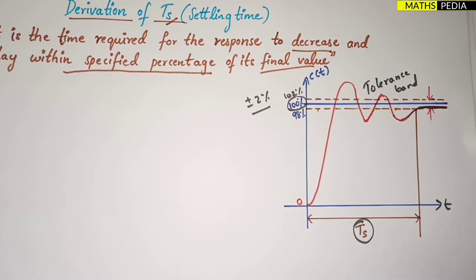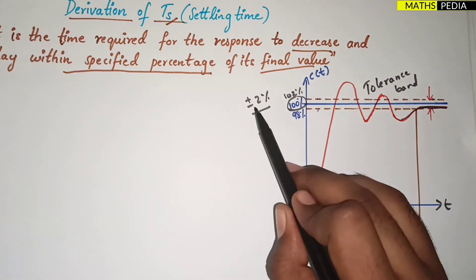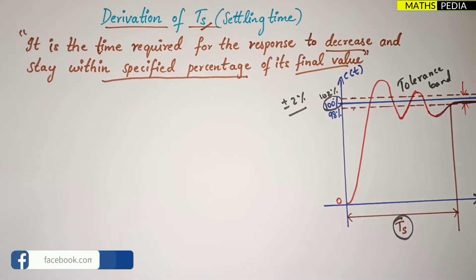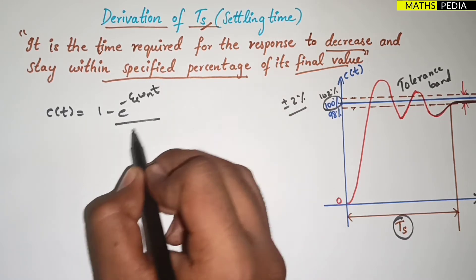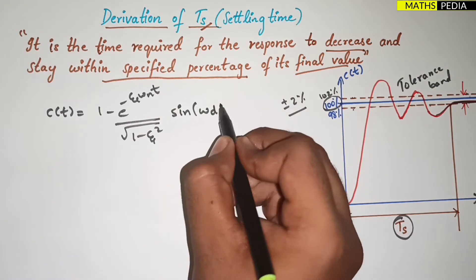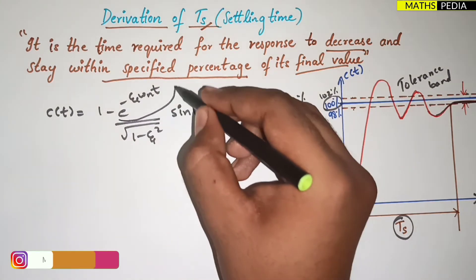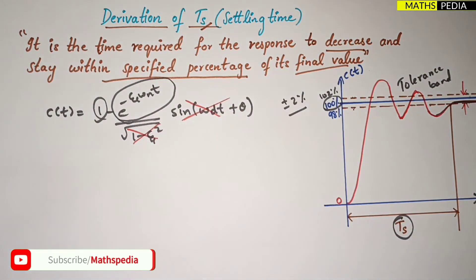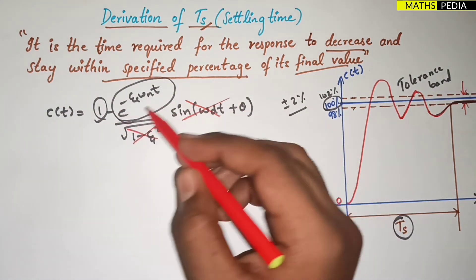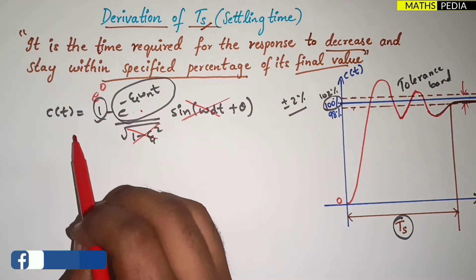So settling time is the time required for the response to decrease and stay within the tolerance band of plus or minus 2 percent. For the derivation, we use the response formula: c(t) = 1 minus e^(−ζωn·t) / √(1−ζ²) · sin(ωd·t + θ). For deriving Ts, we neglect the sine part and the √(1−ζ²) term, keeping only the exponential factor and the constant 1.